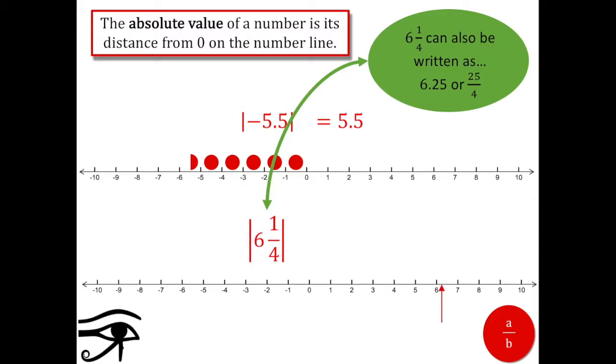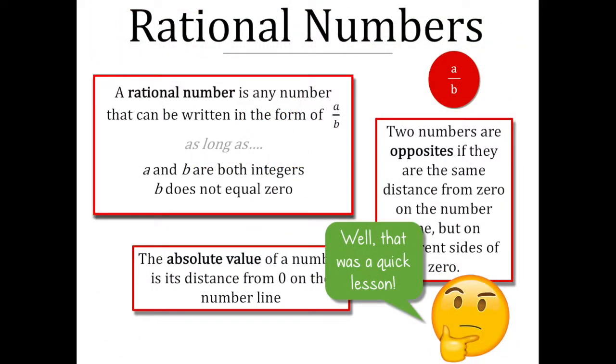Counting the spaces, we've got one, two, three, four, five, six, and just a quarter of the next one. And the absolute value of six and a fourth is six and one-fourth. So that's it, you guys.